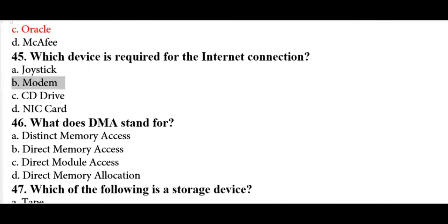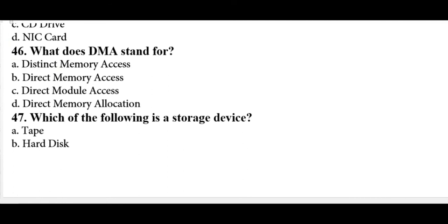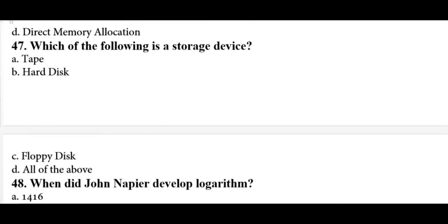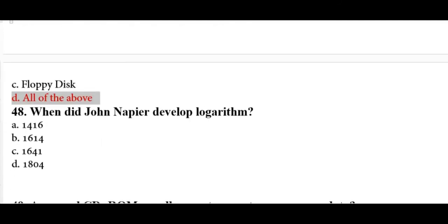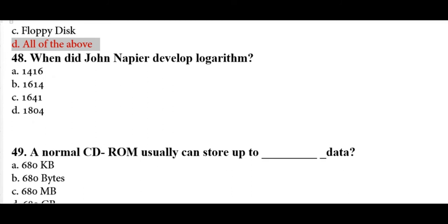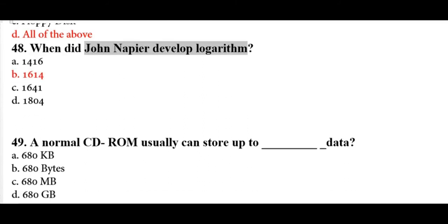A modem is required for internet connection. DMA stands for Direct Memory Access, which is option B. Storage devices include tape, hard disk, and floppy disk — all of the above. John Napier developed logarithms in 1614 — this is an important date to remember.